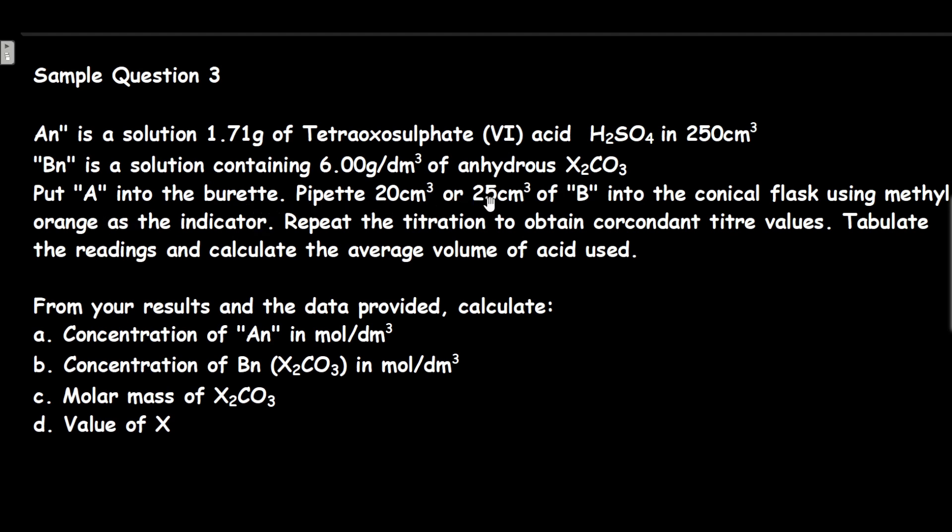Put A into the burette, pipette 20 or 25 cm³ of B into the conical flask using methyl orange as the indicator. Repeat the titration to obtain concordant titre values. Tabulate the readings and calculate the average volume of acid used. From the titration, our average volume of acid used VA is 20.25 cm³.